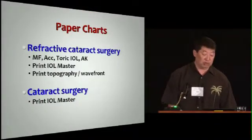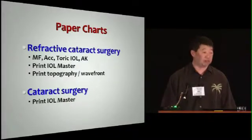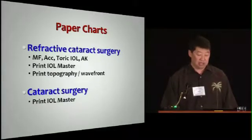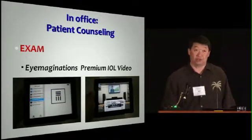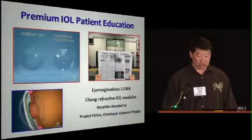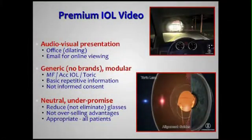We still have paper charts in my office, so we don't print this out unless they become a refractive cataract patient — meaning they're getting a premium IOL or an astigmatic keratotomy. Then we print it out and I bring it to the OR. Otherwise it's just sitting on the server. We use the same system to show patient education and so forth. That has sort of been my solution to the conundrum of doing this efficiently and treating everyone as a potential refractive patient. So we're going to take a look at the K. Thank you.